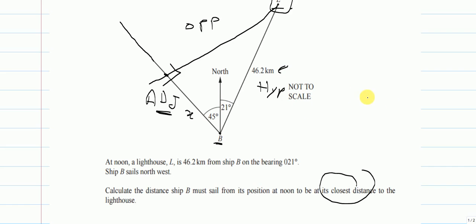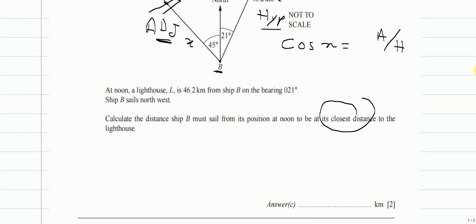We have the hypotenuse side, so the formula which gives the hypotenuse and adjacent is cosine. The formula for cosine is cos angle equals adjacent over hypotenuse. We'll just substitute that, so cos angle is 45 plus 21.